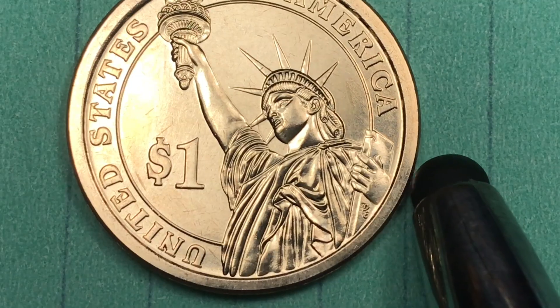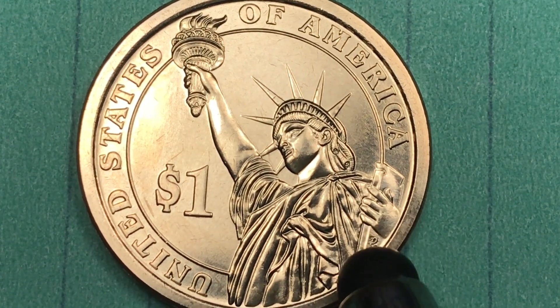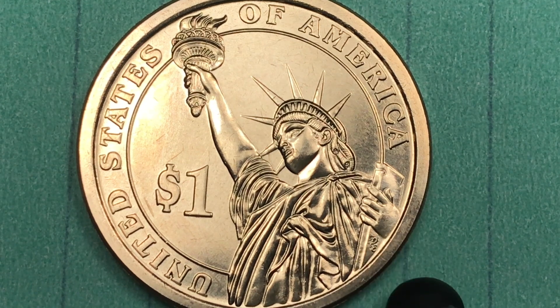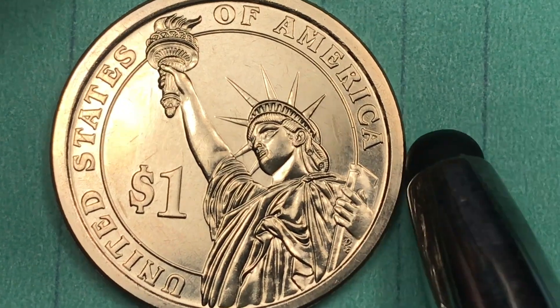They made them at the Philadelphia Mint where they made 8.6 million. For Position A the best coins have sold for $150. Position B edge lettering, the best coins have sold for $225.